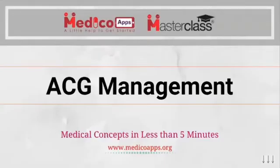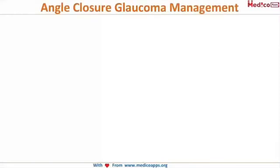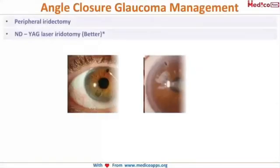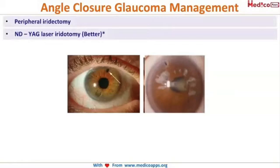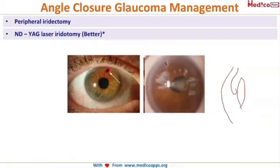Now, angle closure glaucoma — this is important from your exam point of view. What you will do is a peripheral iridectomy. What you are seeing here is a hole made with the NDAG laser; this improves the outflow of aqueous humor when there is a pupillary block. This is my cornea, this is my lens, and this is the iris. The iris comes into contact with the lens whenever there is any dilatation or any other pathological condition.